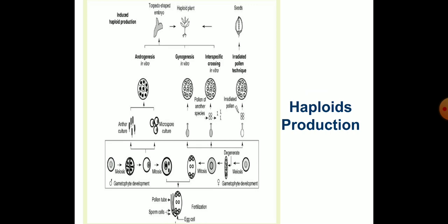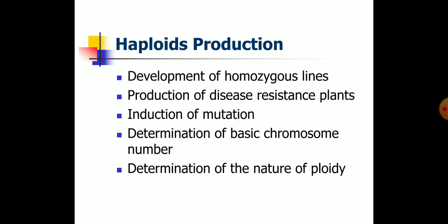In vitro culture of un-pollinated ovules is usually employed when anther cultures give unsatisfactory results for production of haploid plants. In vitro production of haploid plants is of great significance in plant breeding programs. It is possible to develop homozygous lines within a few months by employing anther culture. Disease resistance genes can be introduced while producing haploid plants, and disease resistant plants can be obtained by haploid culture.